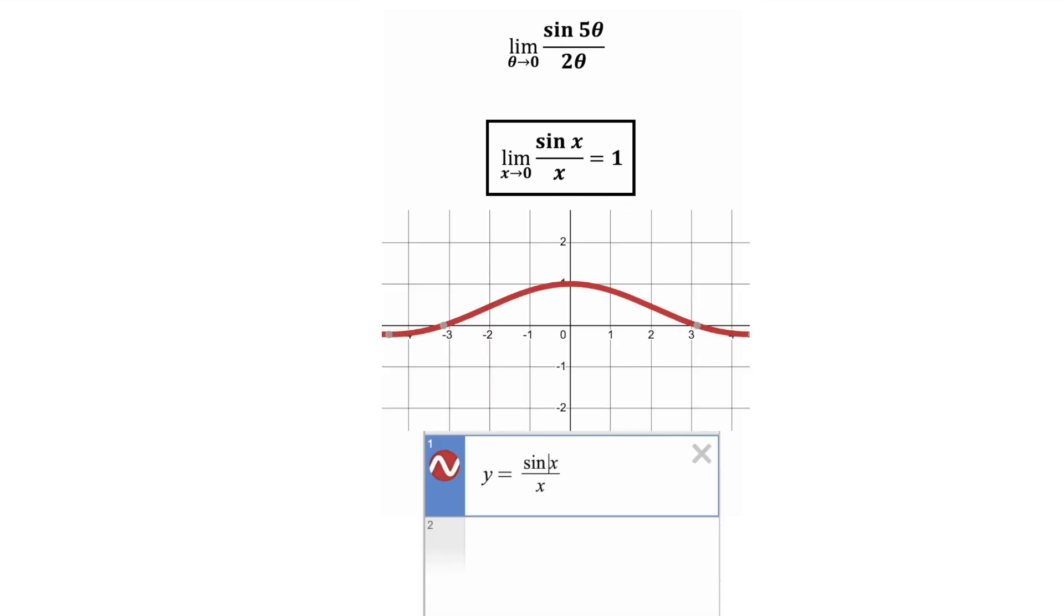Notice how the graph of sine of x over x approaches 1 as x approaches 0. This is also true of sine 2x over 2x or sine 3x over 3x or anything else, as long as these two numbers match. In fact, if we do sine ax over ax and use a slider for all these different values of a,